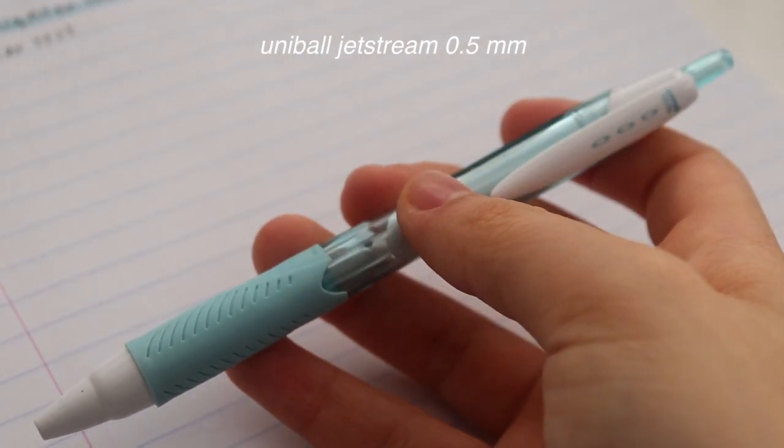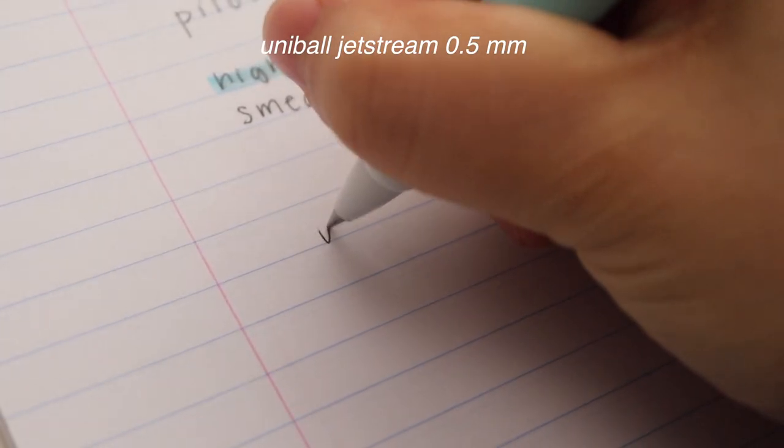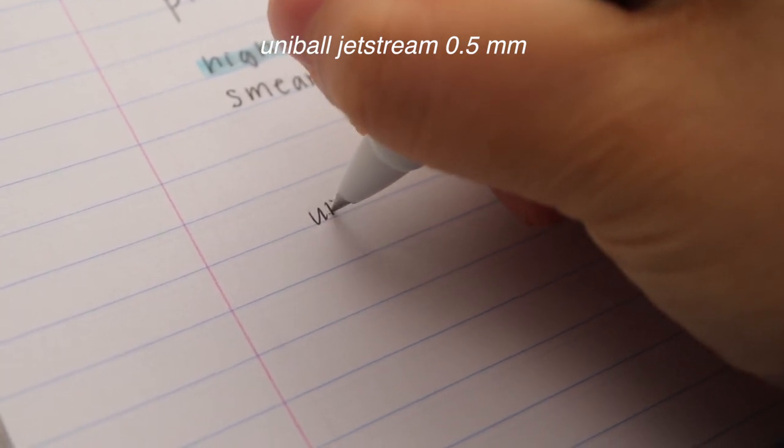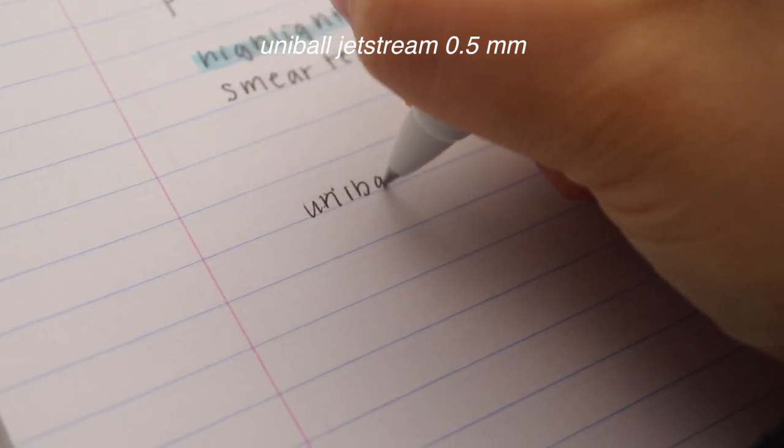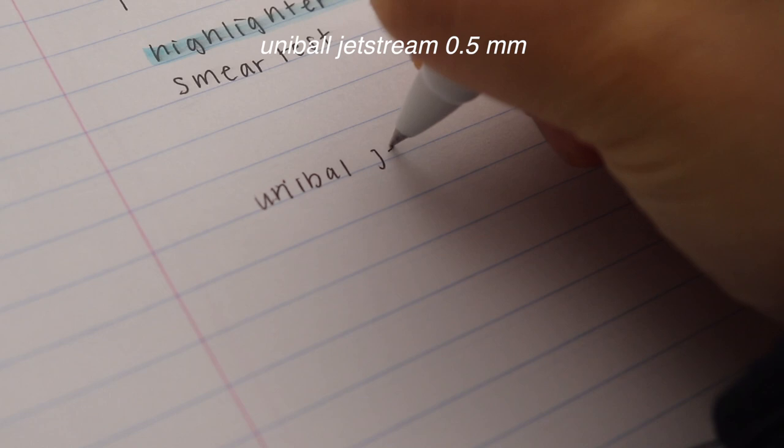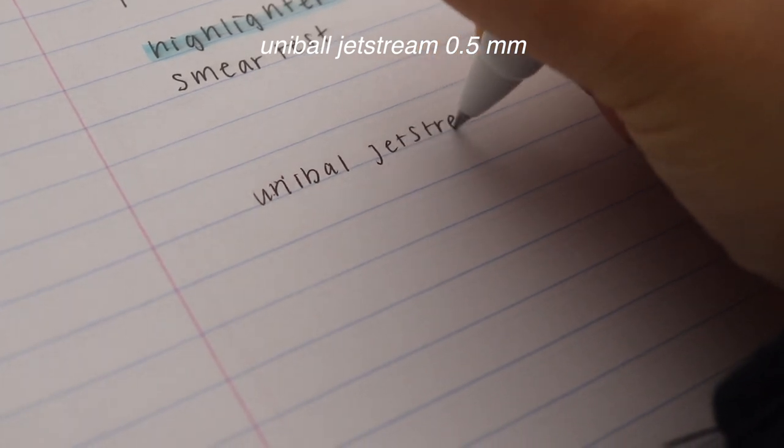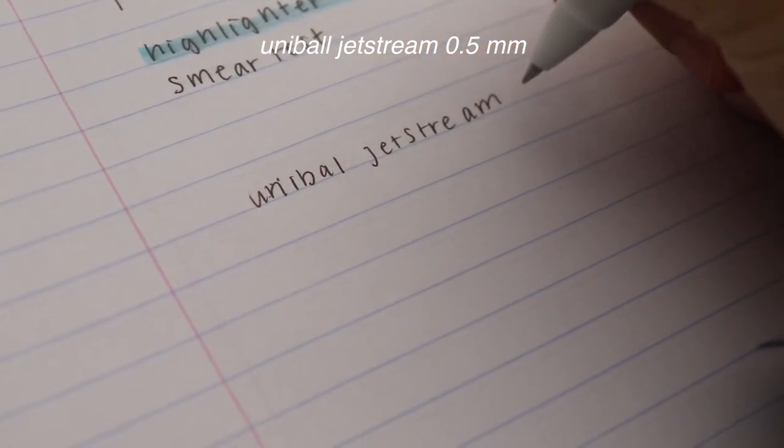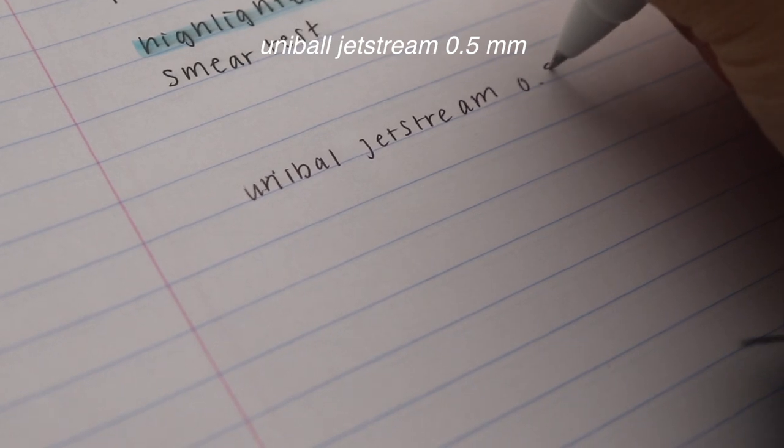Next up is the Uniball Jetstream in 0.5. This pen is actually a ballpoint pen. Considering that it's a ballpoint pen, the Jetstream writes really smoothly, which I think is part of the reason why it's really popular.